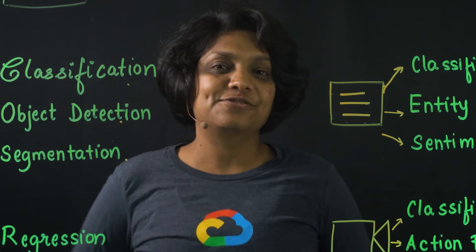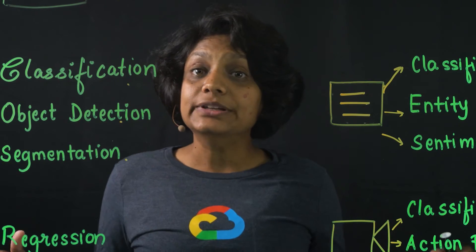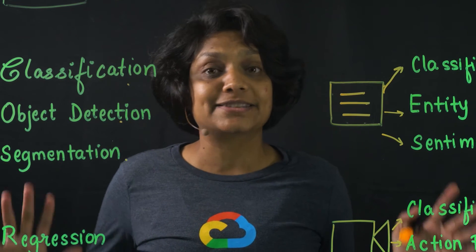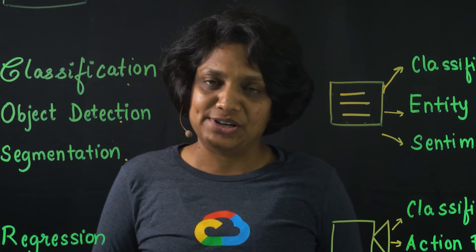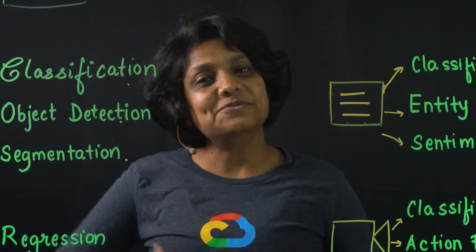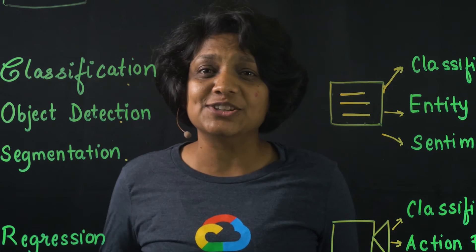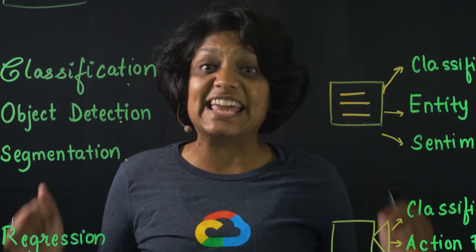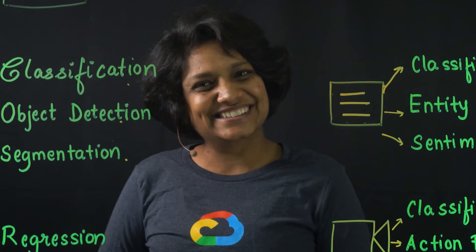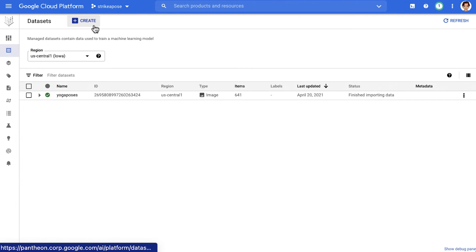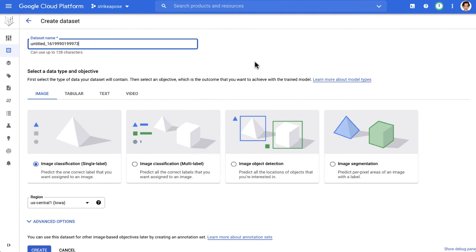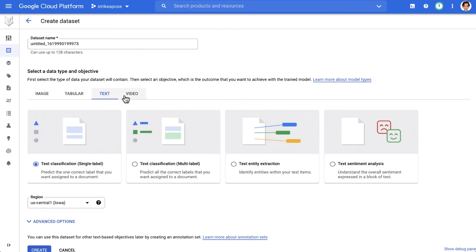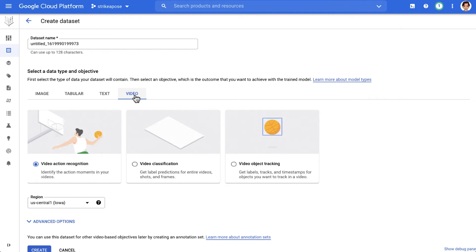We just covered the basic functionality. I've included a link below for more details and best practices on data preparation. Now let's see how to create and manage the data sets in the console. In the console, we go to Vertex AI and click on the data set, where we see image, tabular, text, and video data sets for the different objectives we talked about earlier.